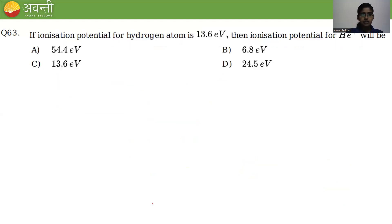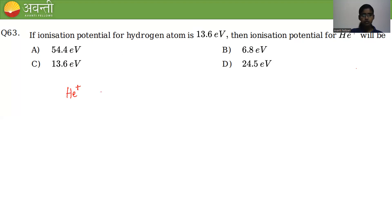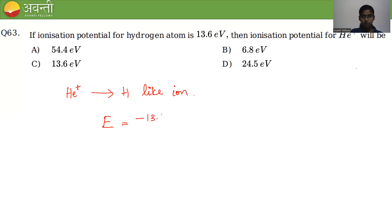Question number 63: if the ionization potential for hydrogen is 13.6 eV, find the ionization potential for He⁺. He⁺ is a hydrogen-like ion since it contains only one electron. For hydrogen-like ions, the energy formula is E = −13.6 × Z²/n².